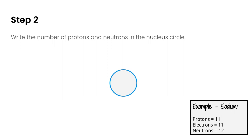In the nucleus we have both protons and neutrons, so we need to show how many of each we have in our sodium atom. We write a lowercase p with a superscript plus — which denotes that every proton has a positive charge — and that equals 11, because we have 11 protons in our sodium atom.